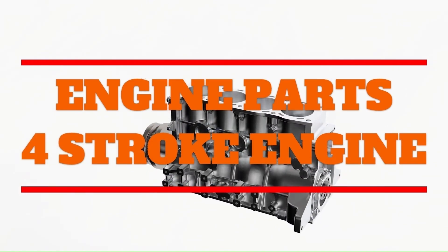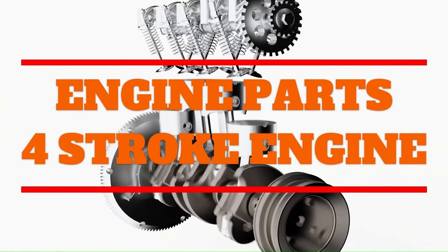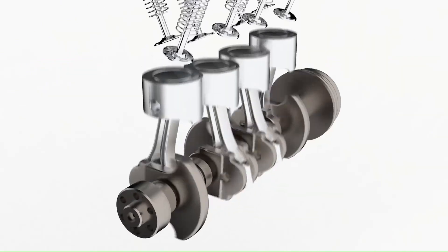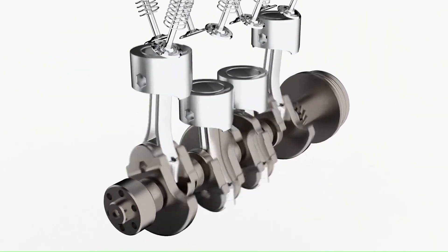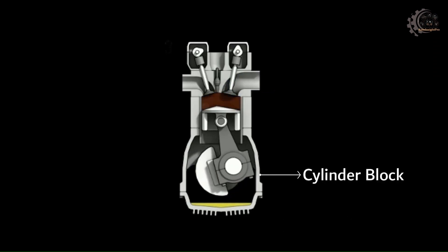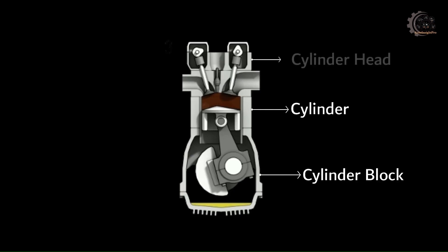Cylinder block is the structure which contains the cylinders and other components. Cylinder is a chamber where fuel is combusted and power is generated. Cylinder head sits above the cylinders and forms the roof of the combustion chamber.